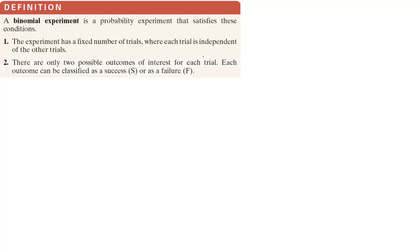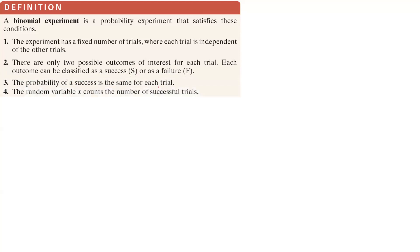Second, there are only two possible outcomes of interest for each trial. Each outcome can be classified as a success (S) or a failure (F). Third, the probability of a success is the same for each trial. And finally, the random variable X counts the number of successful trials.